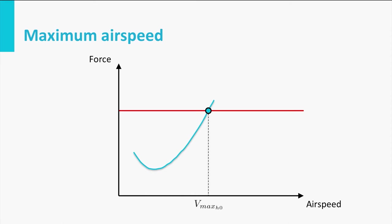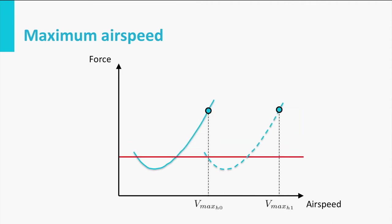Imagine this is the situation for sea level conditions. What happens if we increase altitude? The drag curve will start to shift to the right, which suggests that the maximum airspeed increases. On the other hand, maximum thrust reduces as well, which results in a decreasing maximum airspeed. Depending on the specific engine characteristics — in other words, by how much thrust reduces at a specific altitude — maximum speed will either increase or decrease.